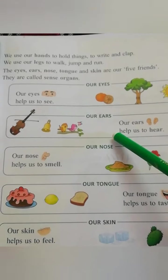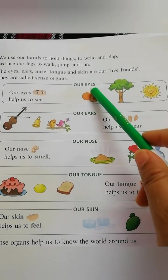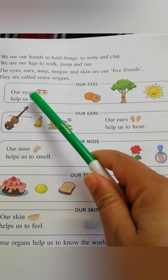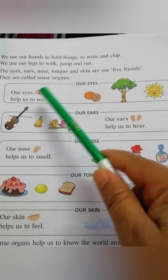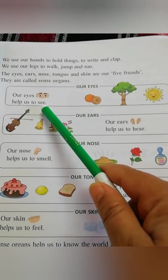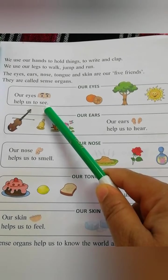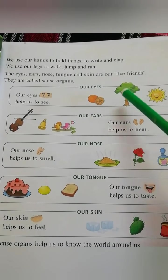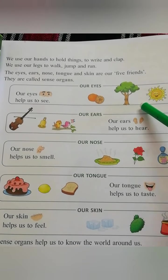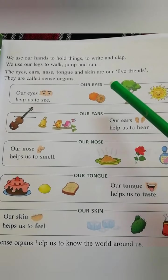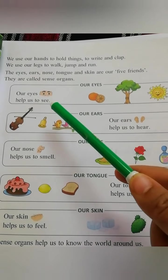Come, look here. Our eyes help us to see. We can see everything with our eyes. Our eyes help us to know color, shape and size. So we are able to see everything with the help of our eyes.